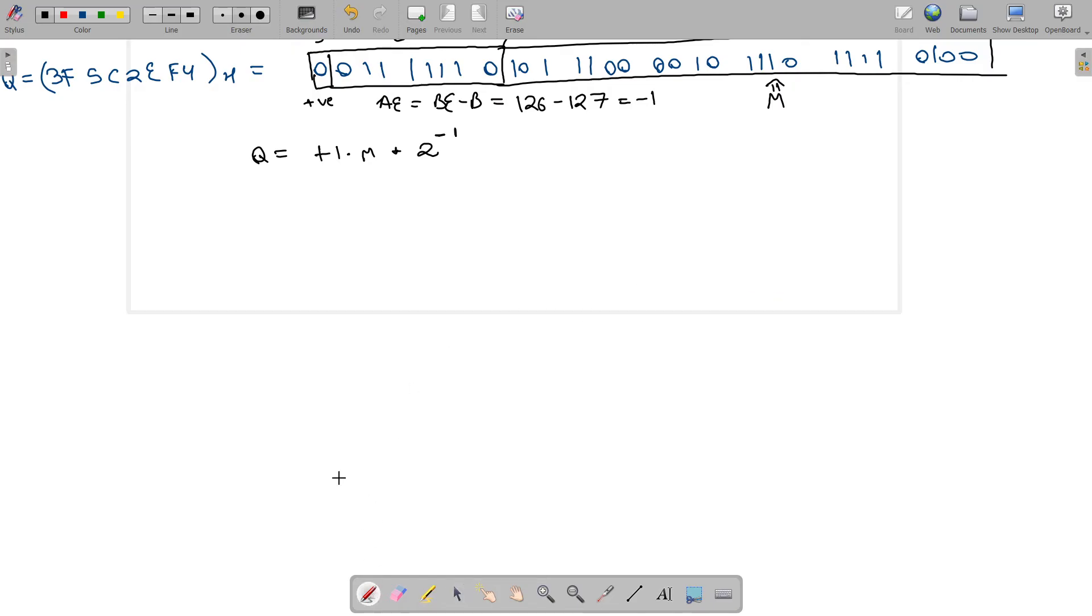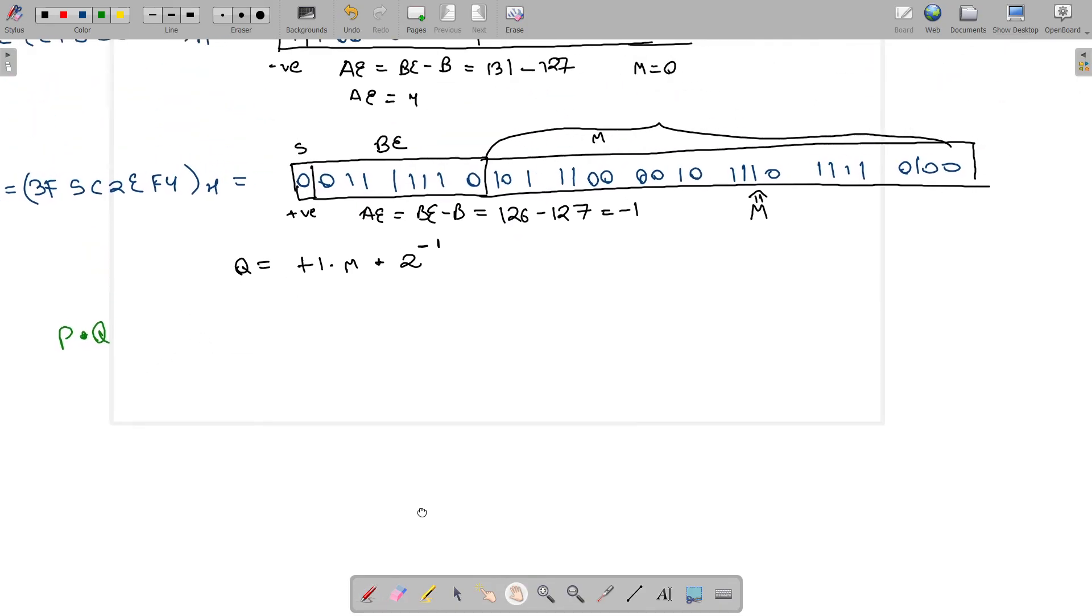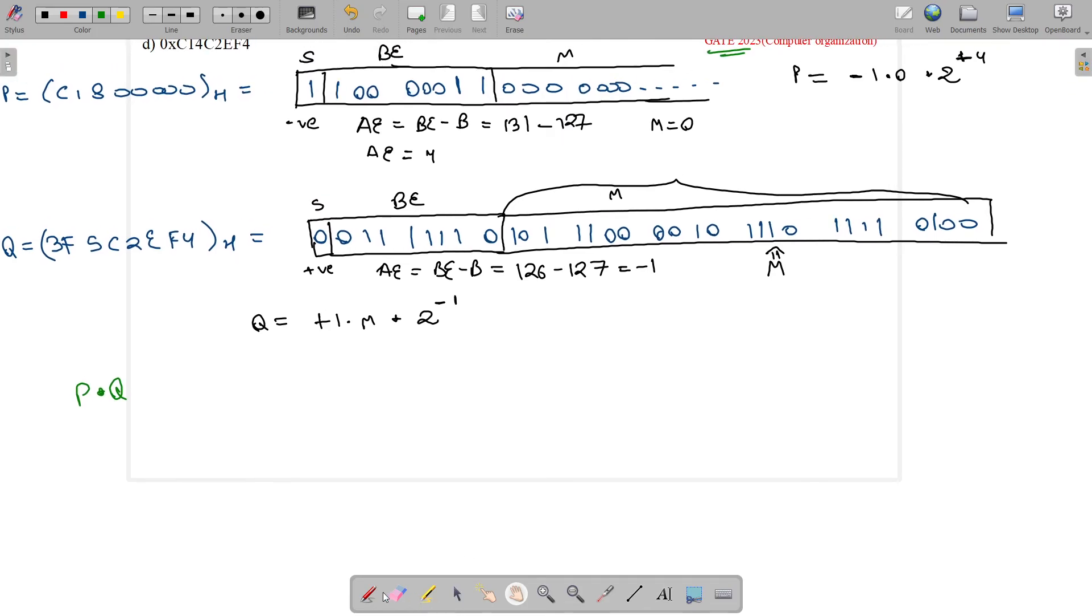Now what we need to do is find the multiplication P×Q. You can easily see that P is a negative number and Q is a positive number. So P×Q, what will be its sign? It will be a negative number, which means 1.